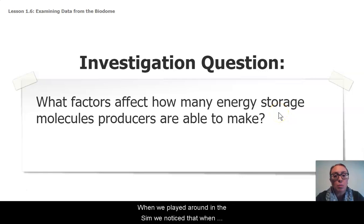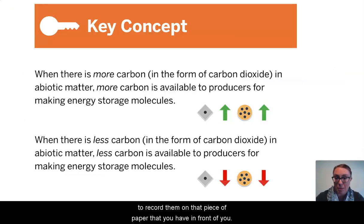When we played around in the sim, we noticed that when I decreased sunlight or decreased the amount of carbon dioxide in the atmosphere, that created a decrease in the energy storage molecules that were produced. And if you were able to do the optional sim challenge in activity four, you notice that the opposite was also true. If I were to increase the amount of sunlight or increase the amounts of available carbon dioxide, that my energy storage molecules as a result of photosynthesis also increased. These relationships are really important ideas, and we want to record them on that piece of paper that you have in front of you.